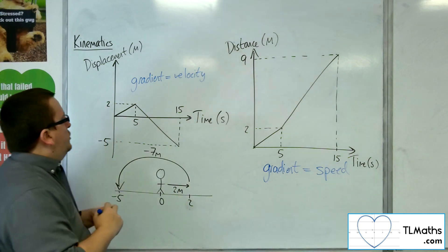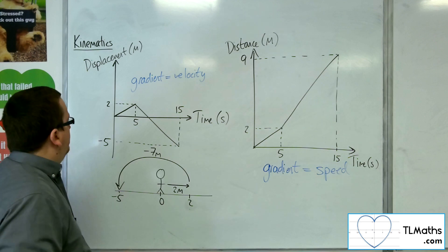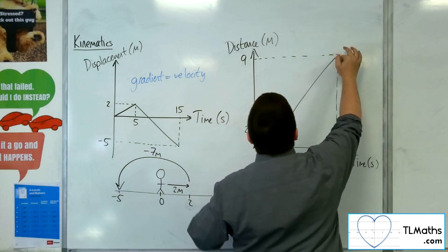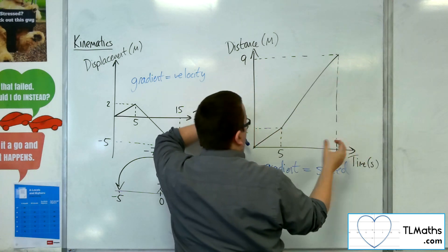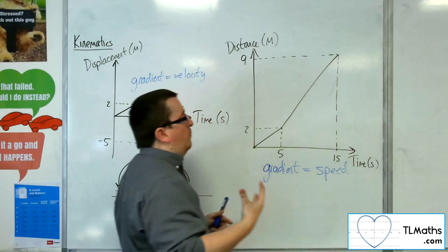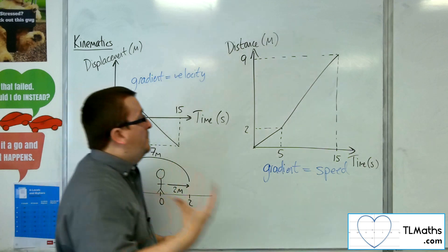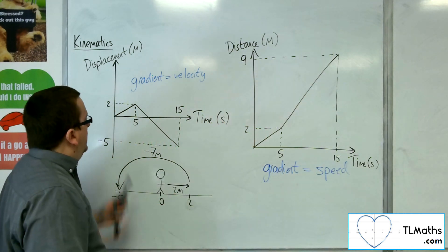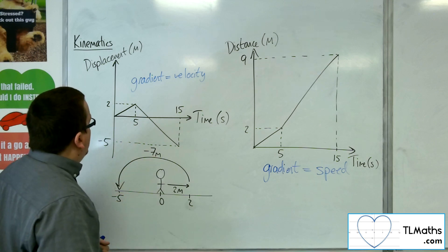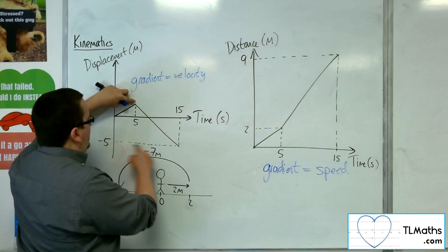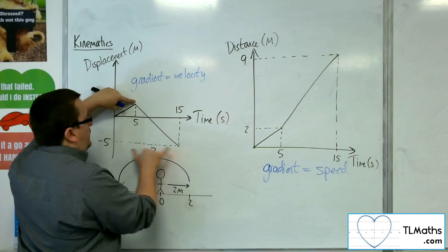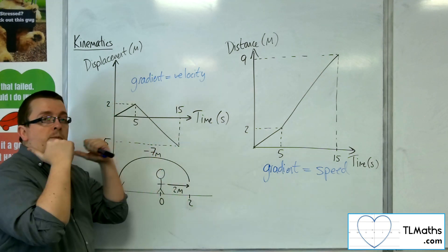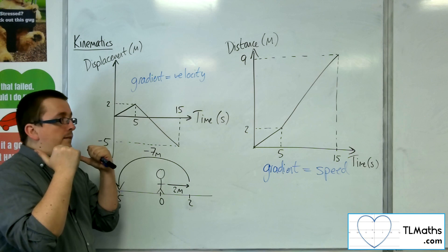So, the change in displacement divided by time. So, whereas, for example, here, you've got 9 take away 2, so 7 over 10, so 0.7 metres per second is the speed for this section here between 5 and 15 seconds. Between 5 and 15 seconds here, you've got from 2 down to minus 5, so minus 7, divided by 10, so minus 0.7 metres per second because the person's travelling back the other way.